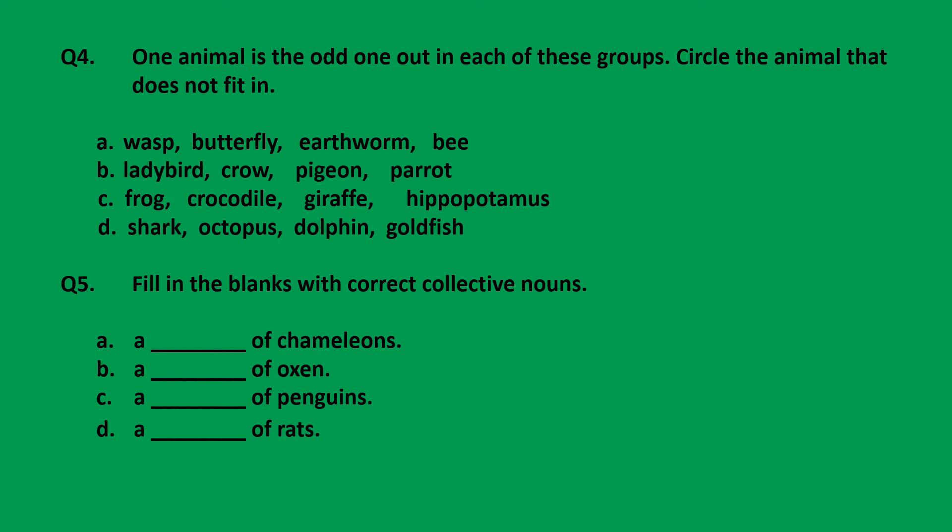Group C: frog, crocodile, giraffe, and hippopotamus — find the odd one out in this group and circle that animal's name. Group D: shark, octopus, dolphin, and goldfish — out of these, which one is the odd one? Find out and circle it.